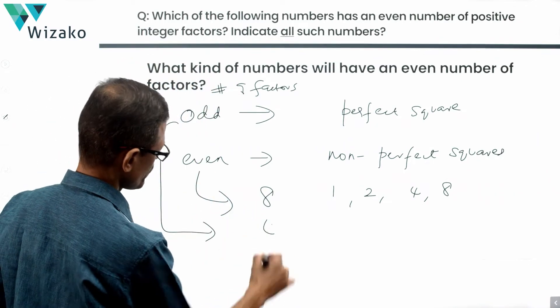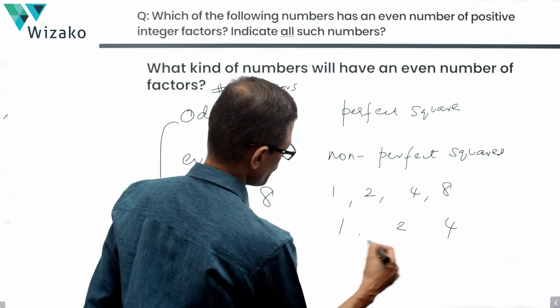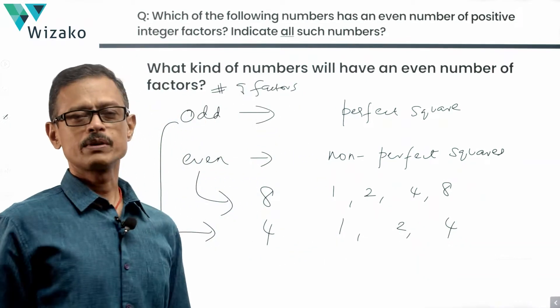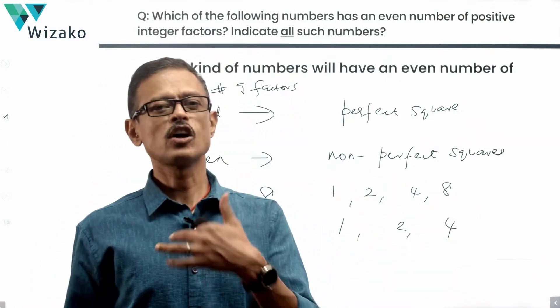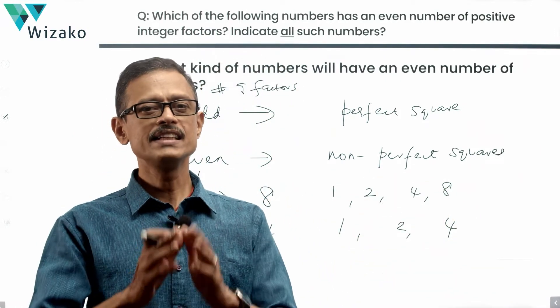We're going to look at this case. We'll look at four. Four is a perfect square. Factors of four are one, four, two. So number of factors for a perfect square is odd. Number of positive integer factors for a number which is not a perfect square is essentially even number of factors.